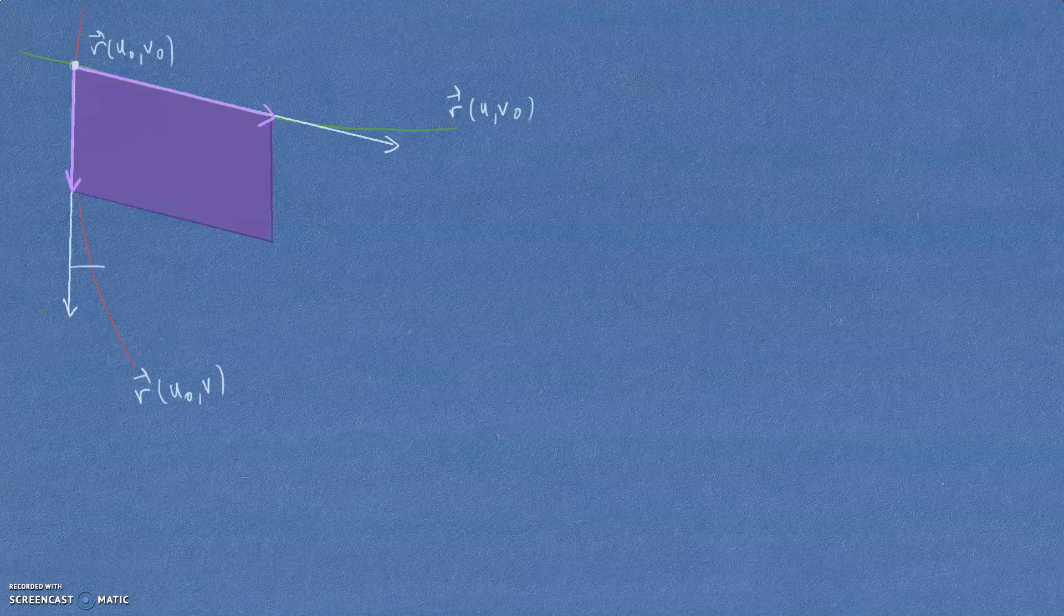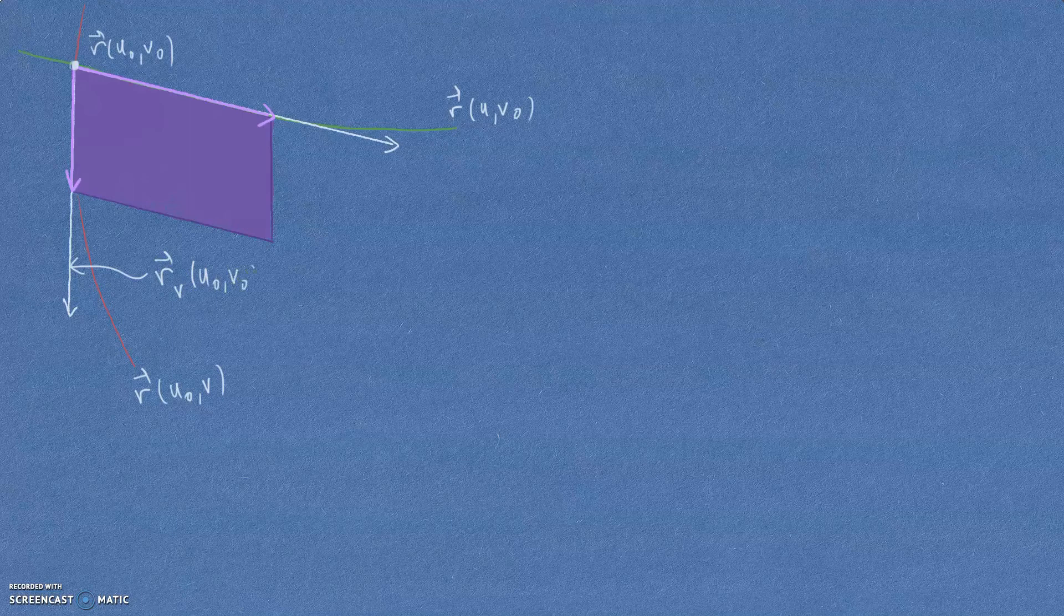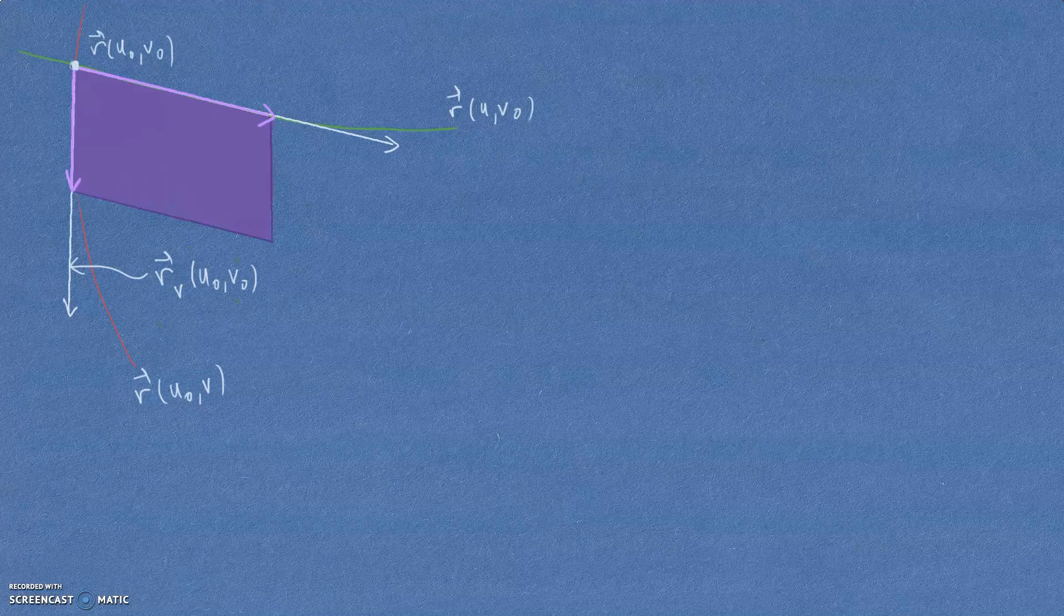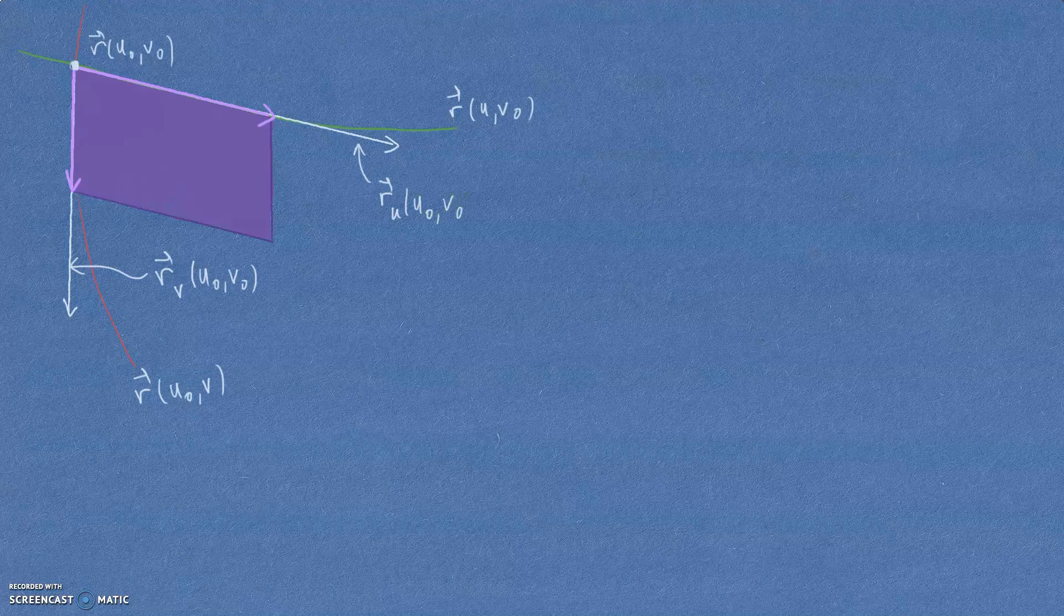And the tangent vectors here are obtained by differentiation. So this tangent vector is R. The partial derivative of that with respect to V calculated at R0 comma V0. We are concerned with them emanating out of that point in particular, so we're plugging in V0 into that. Similarly, this tangent vector here is the partial derivative of R with respect to U with U0 comma V0 plugged into it also. They're very specific vectors.